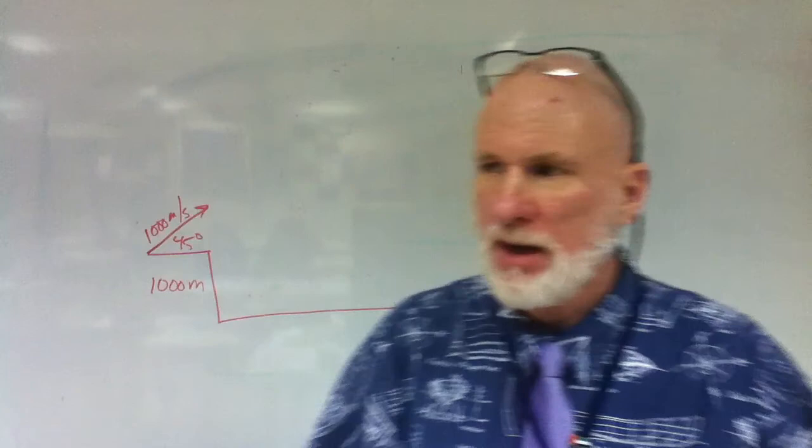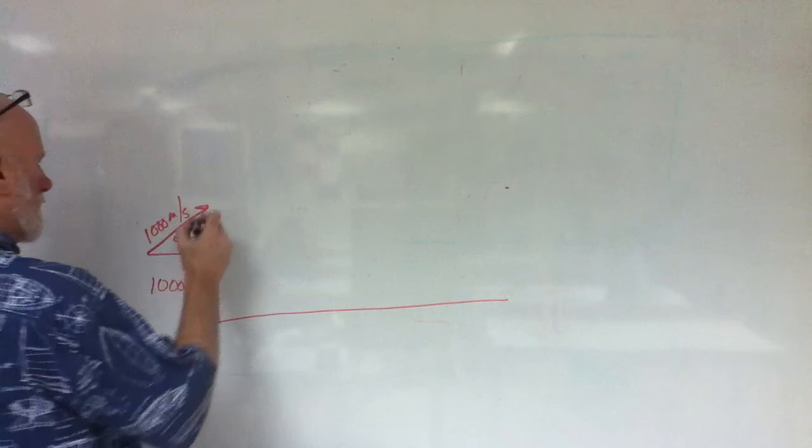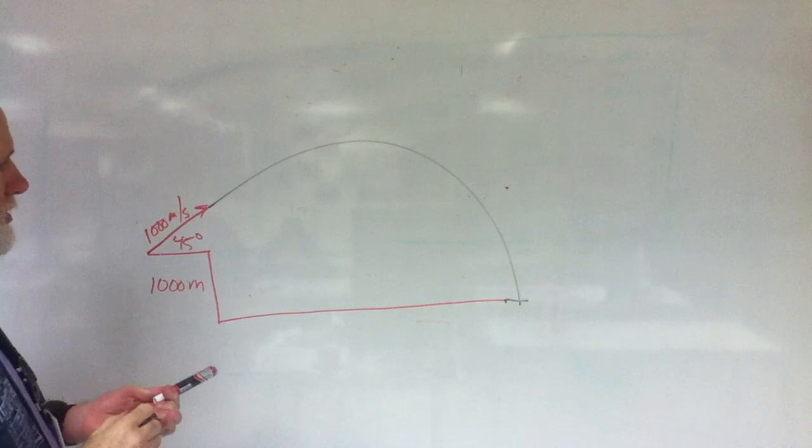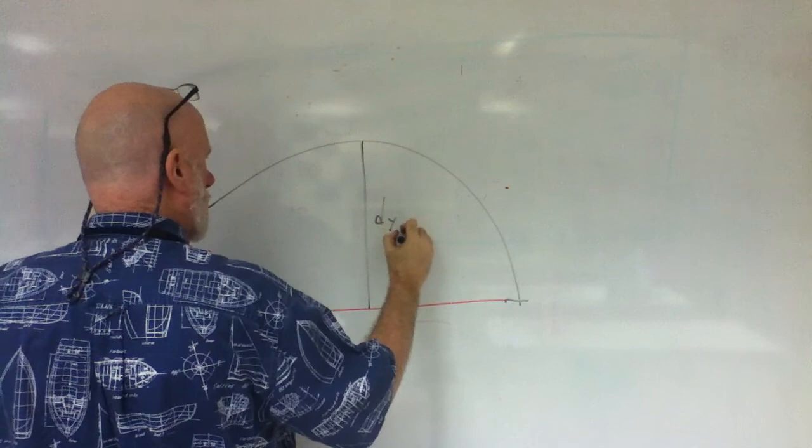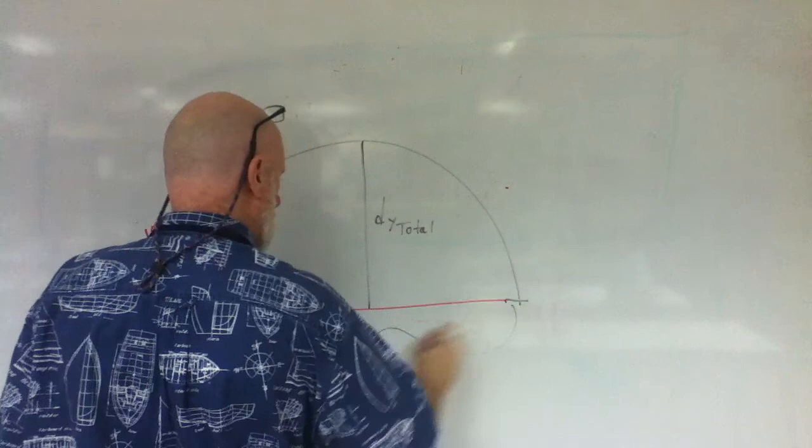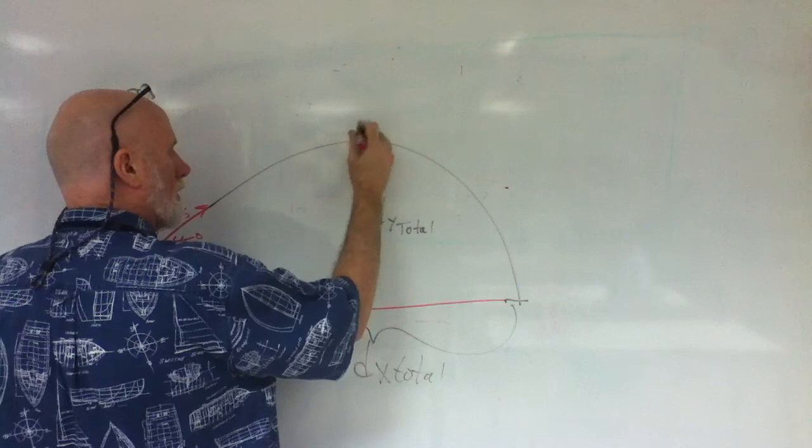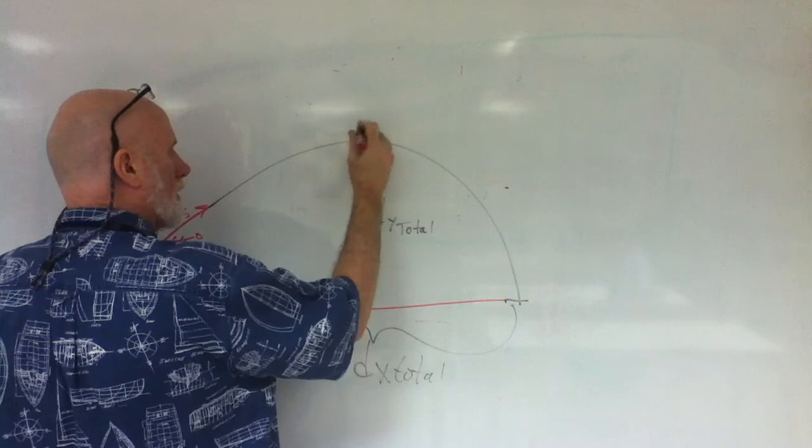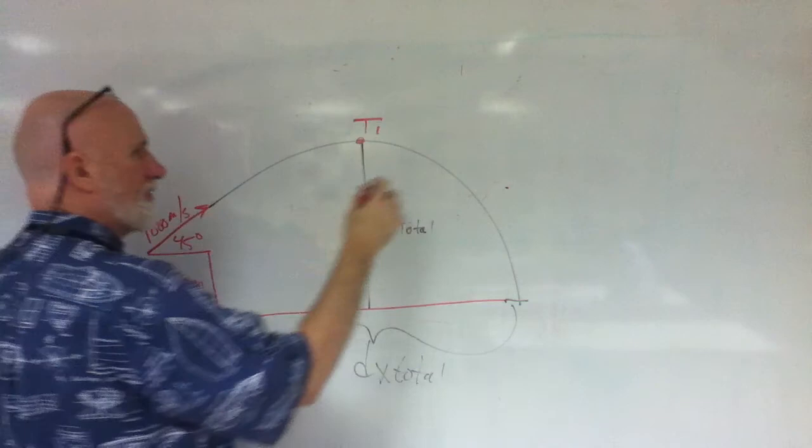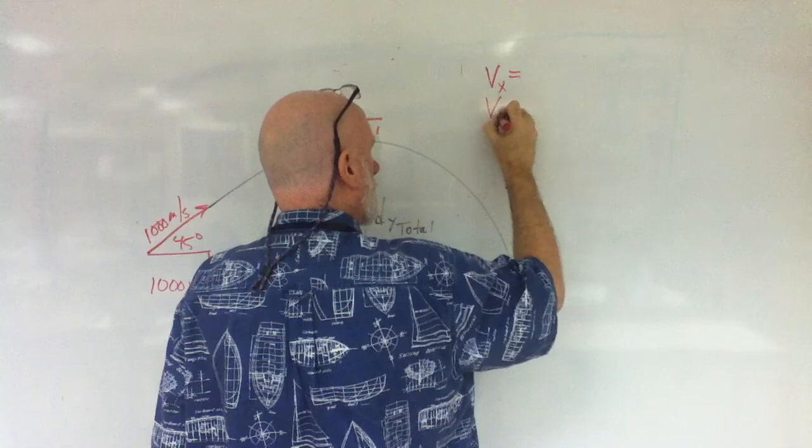It's going to go like this. So, we want to find this height, dy total. We want to find this distance, dx total. Correct? This first time here we're going to call T1. So, we've got to find, is this on the camera right here? Is that on camera? Yeah. All right. Find for me Vx and Vy.